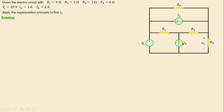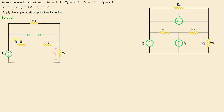Next we proceed to deactivate all but one independent source in the circuit. This involves replacing inactive voltage sources with short circuits (zero voltage) and current sources with open circuits (zero current). We begin by activating the independent voltage source Vs and deactivating the independent current sources Ia and Ib, which will be replaced by open circuits.